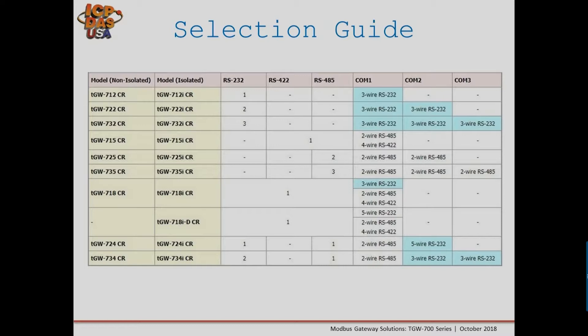The selection guide lists individual TGW series modules. The model number format is TGW-7 followed by a digit for the number of COM ports, then a digit for the COM port type. For example, one COM port RS-232, two COM ports RS-232, and the most commonly used model is the TGW-715, which has a single RS-485 bus.